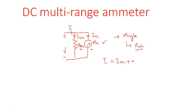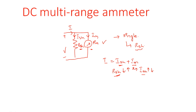i = ish + im. If Rsh changes — either increment or decrement — this will change the current ish. If Rsh decreases, the current flowing through that resistance will increase; if Rsh increases, the current flowing through it will decrease. Depending on this proportionate change in Rsh, ish changes, and in order to balance the equation i = ish + im, the total current i will change. So one resistance Rsh is for one range.